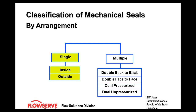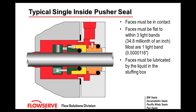We're going to talk about single seals — both inside and outside. For a typical single inside pusher seal, the faces must be in contact and must be flat to within three light bands, with most being one light band. One light band equals 34.8 millionths of an inch.